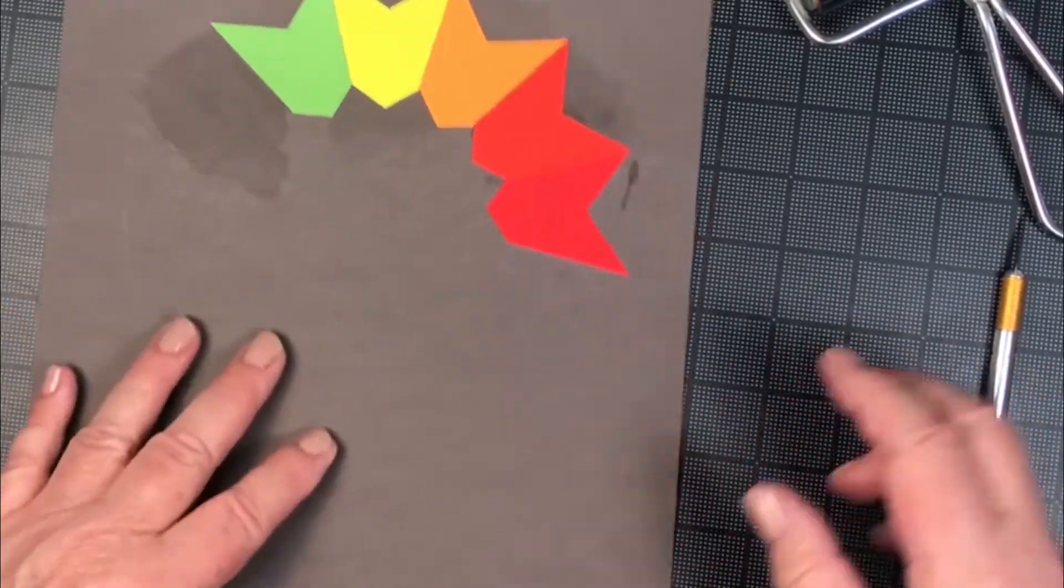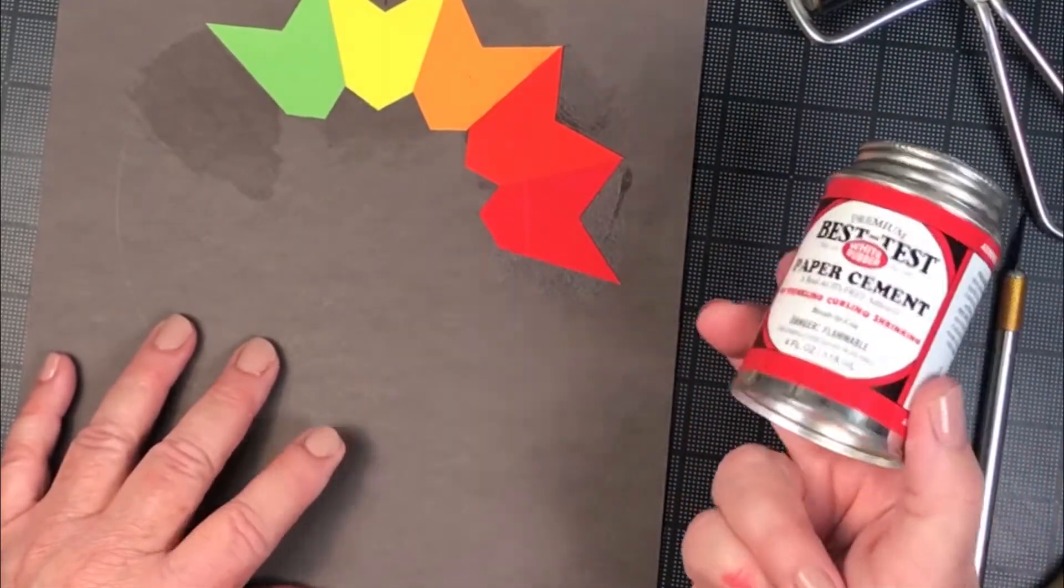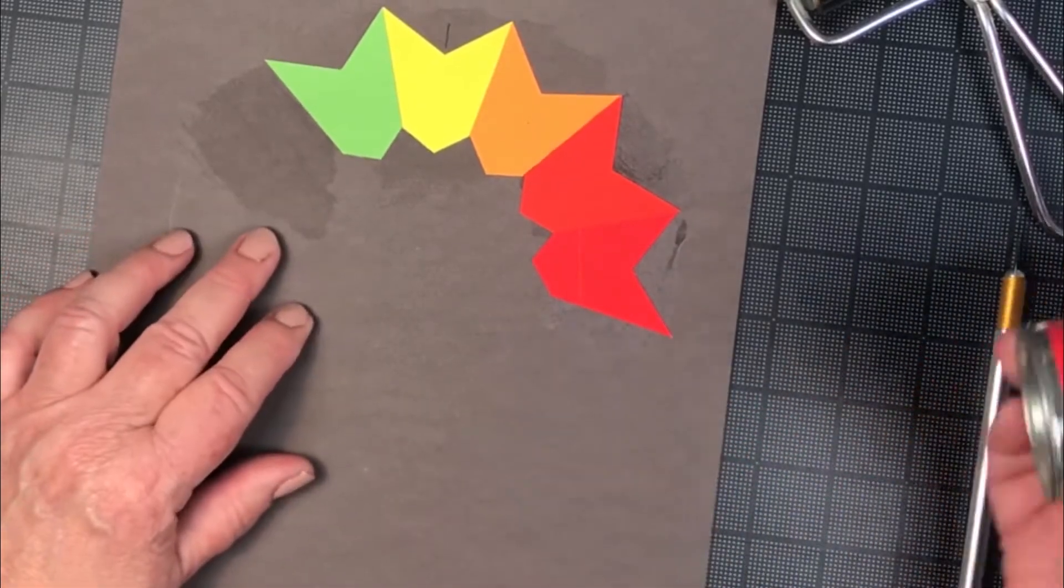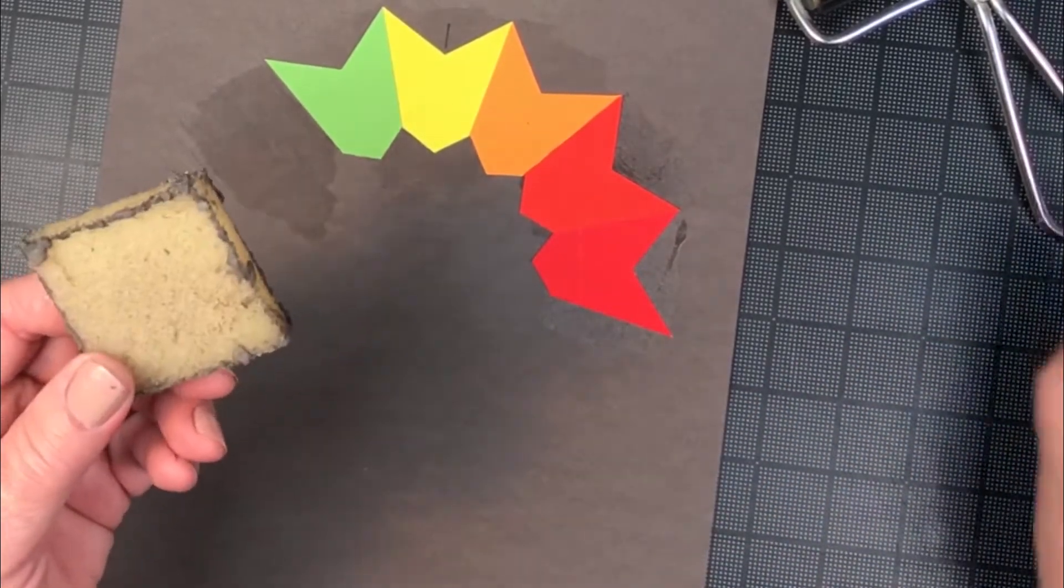So again, with the rubber cement, you coat both surfaces. Let both surfaces dry. That's the best way to work with this and still allow for repositioning.